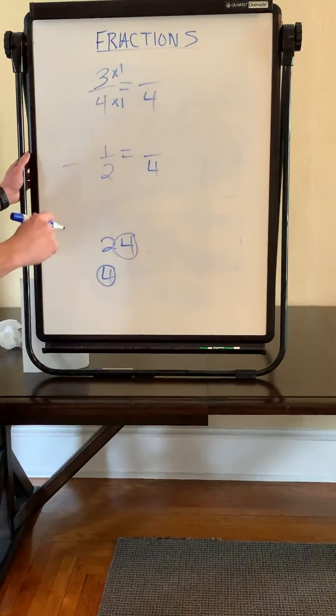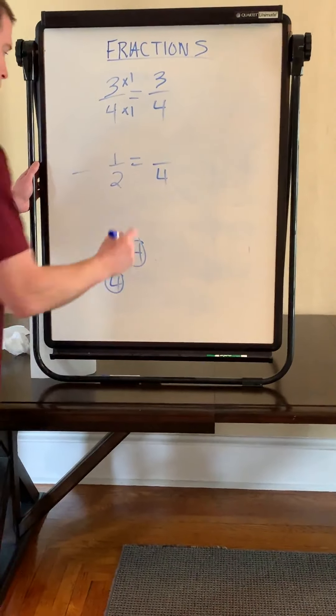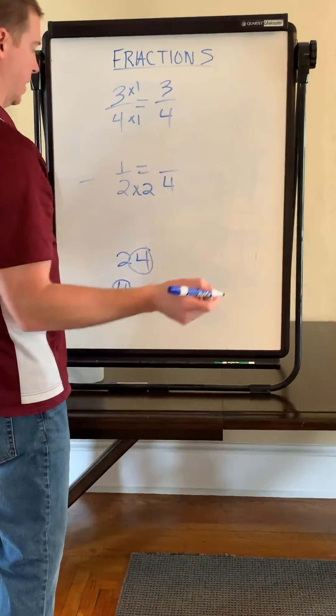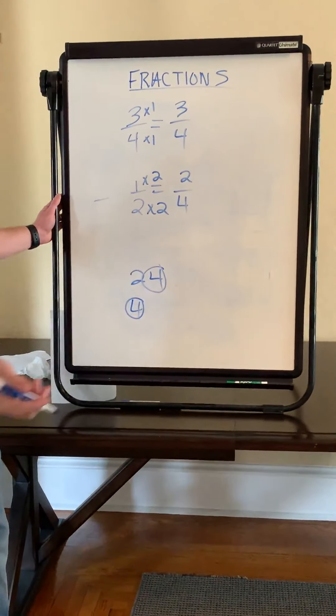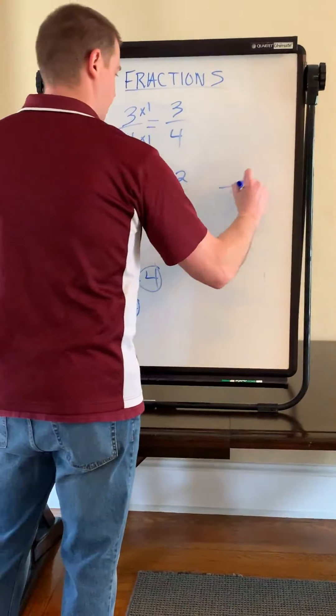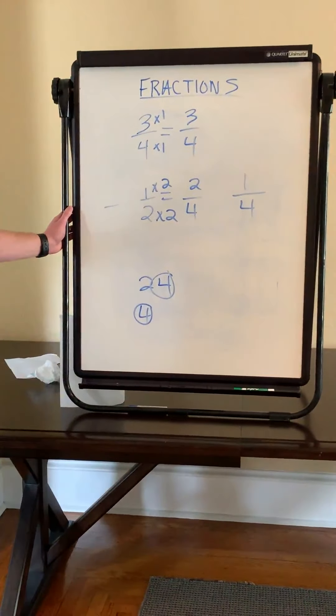Same thing with my numerator, 3 times 1 is 3. How do I go from a 2 to a 4? Times 2. Same thing on top, 1 times 2 is 2. And now I have 3/4 minus 2/4. Same thing. Keep the same denominator. 3 minus 2 is 1. 1/4 is the answer.